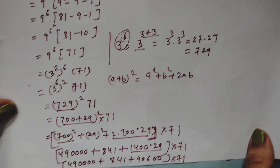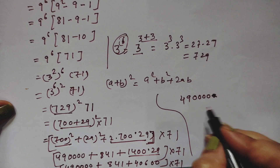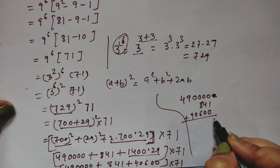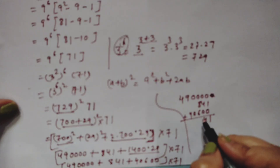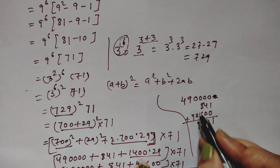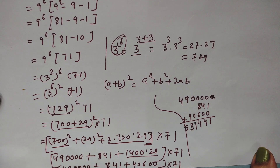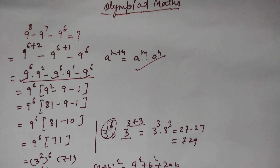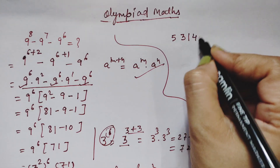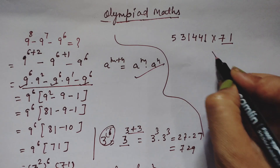Now we add the three terms inside the bracket: 490,000 plus 841 plus 40,600. Adding these gives us 531,441. So our expression is now 531,441 times 71.